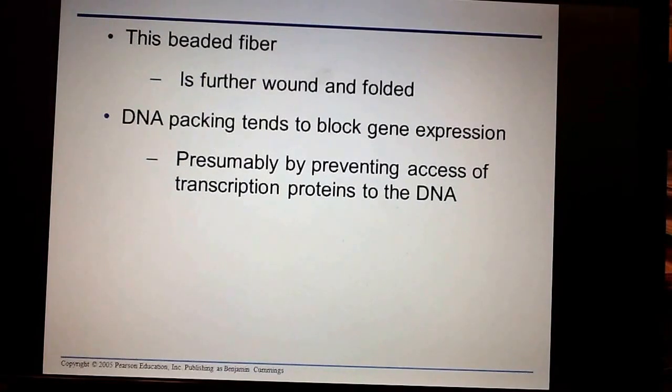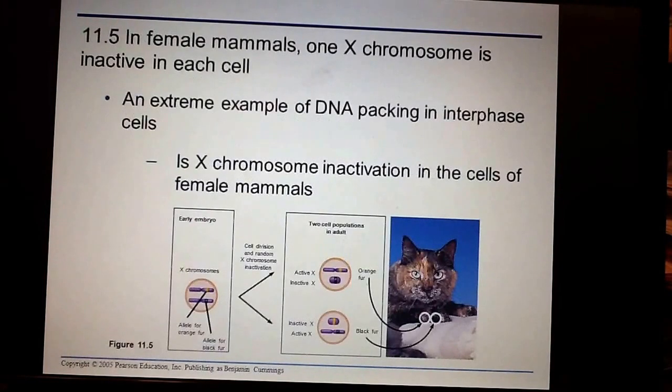This chromosome gets further wound and further folded until basically we're preventing the access of any polymerases to do transcription for the DNA. By having DNA packaged when we do, let's say, cell division, we ensure that we're not actually trying to make genes right then. We're looking at the fact that we just want to have it as organized as possible so that we can pass it on.